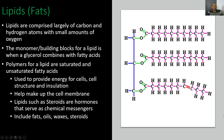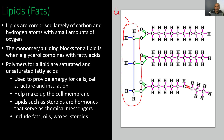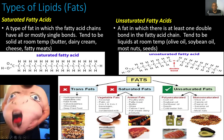Now let's take a look at our lipids, which are commonly known as fats. Lipids are comprised largely of carbon and hydrogen atoms with small amounts of oxygen. The monomer building blocks for a lipid are when a glycerol combines with fatty acids — here's the glycerol group, and it combines with three fatty acids. The polymers for a lipid are saturated and unsaturated fatty acids. Lipids are primarily used to provide energy for cells, cell structure, and insulation, and they also help make up our cell membrane with the phospholipid bilayer. Lipids such as steroids are hormones that serve as chemical messages, and lipids include fats, oils, waxes, and steroids.